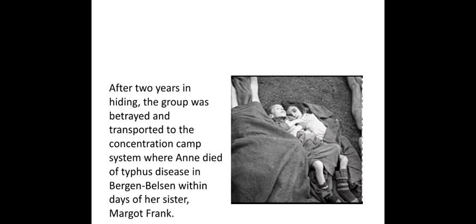After two years in hiding, the group was betrayed and transported to the concentration camp system, where Anne died of typhus disease in Bergen-Belsen — within days of her sister Margot Frank. When Anne Frank was sent to the concentration camp, she died of typhus. She died in the Bergen-Belsen concentration camp, only a few days after her sister Margot Frank also died.